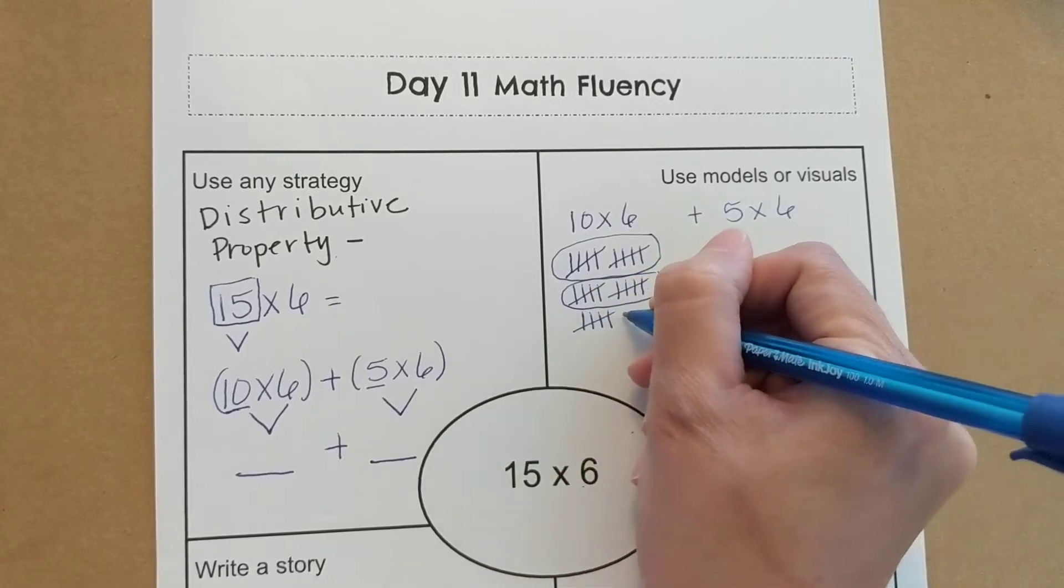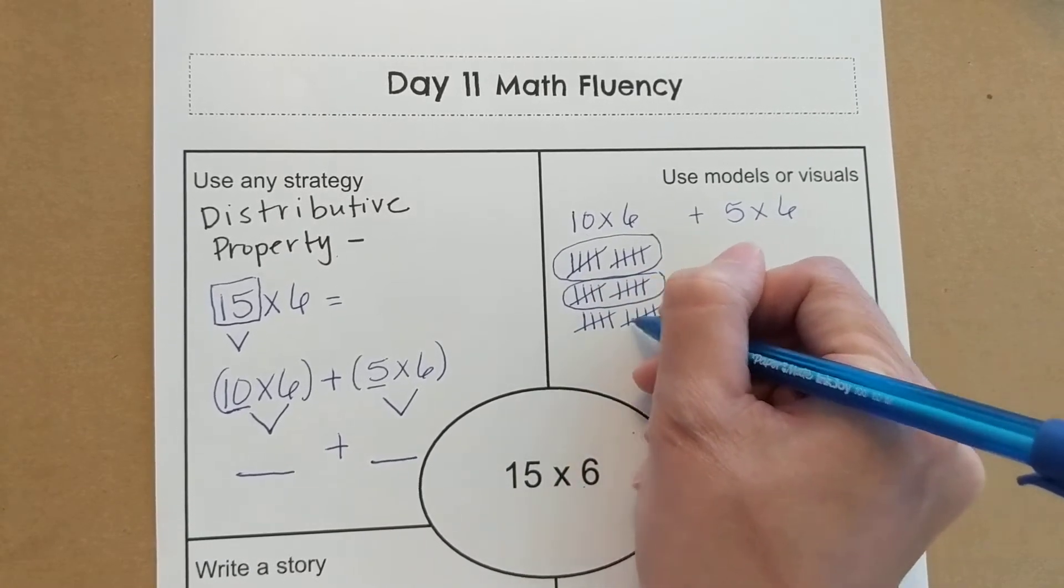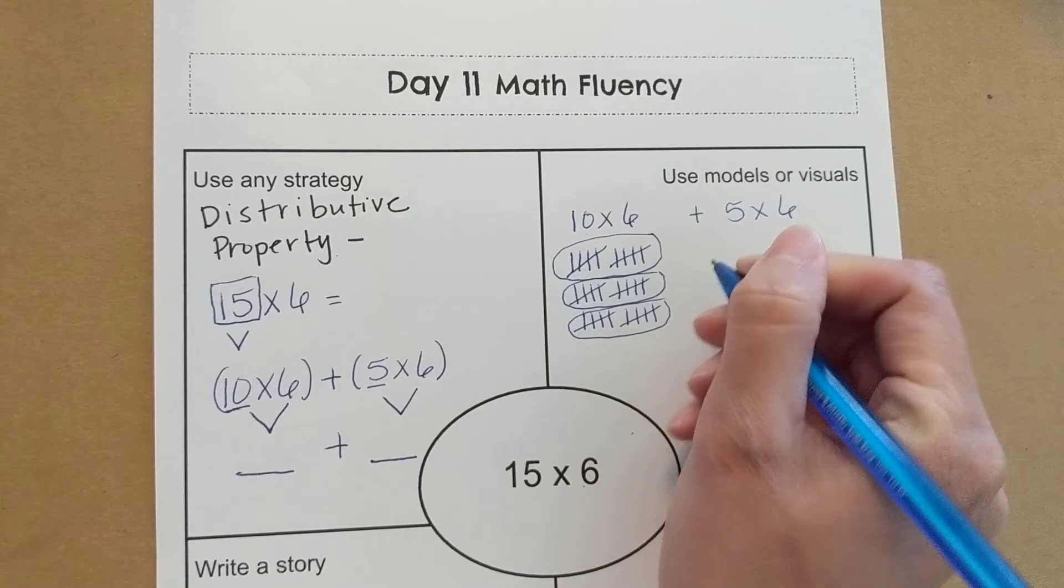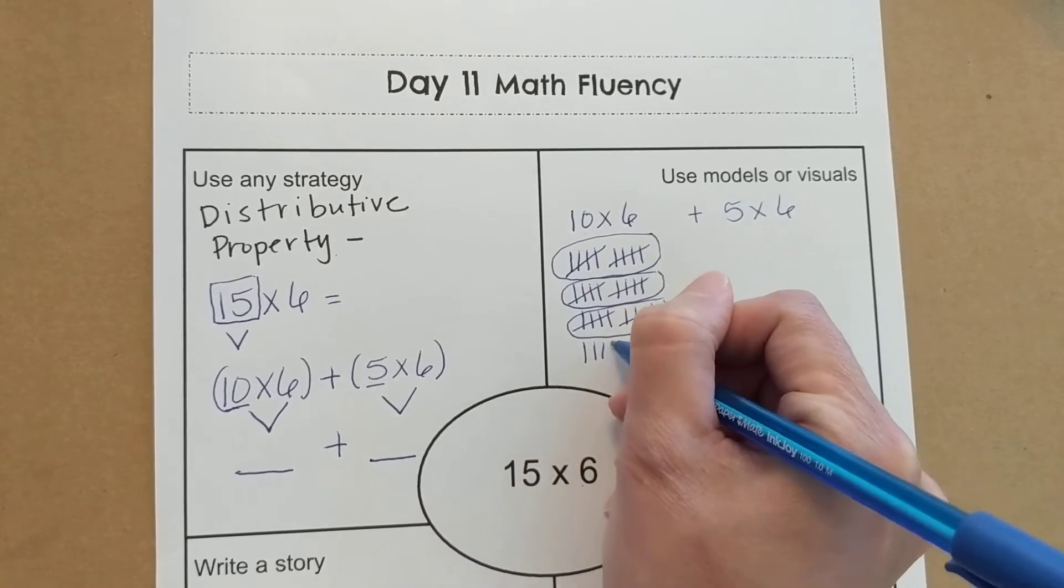2, 3, 4, 5, 6, 7, 8, 9, 10. 3 groups of 10.